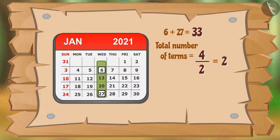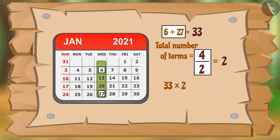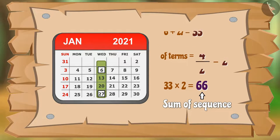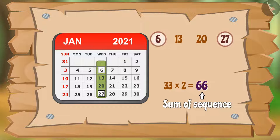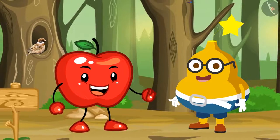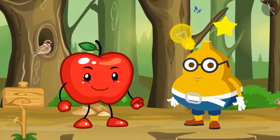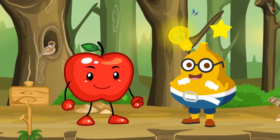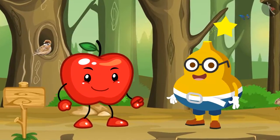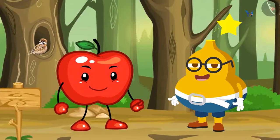Its half is 2, so I multiplied the sum 33 by half the number of terms, that is 2. In this way I got the sum of the sequence. We can also find the sum of the sequence by adding the equally placed numbers like this. After hearing this, Appie says: Super, Fruity — you really are very clever! Fruity got very happy and said: Thank you, Appie! Students, I hope you understood this topic well. Thanks for watching this video — see you later.